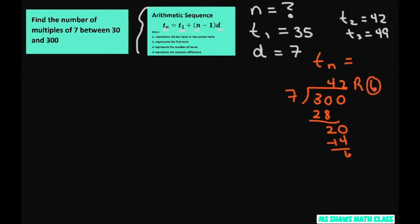So what you can do is just take 300 minus 6, which gives you 294. That's going to be your last term because you're subtracting the remainder. Or what you could do is just take 7 times 42, and that will give your last term. So 7 times 42 equals 294. So our last term is going to be 294.